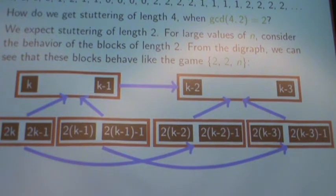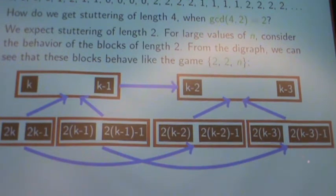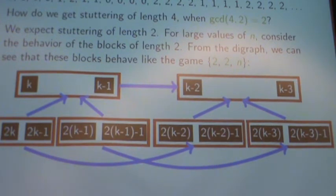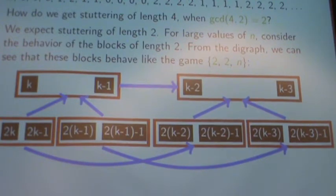We know that in the game subtract 2, divide by 2, we still expect stuttering of length 2, which means I eventually expect to start seeing stuttering in the blocks themselves. Eventually one block has the same value as the next, and that's where we get stuttering of length 4. In general, this has the potential to continue: if we looked at subtract 32, divide by 2, first all of the pairs would line up, then all of the blocks of 4, then 8. You have to go far down the sequence. Eventually all the blocks of 16, and then finally all the blocks of 32.